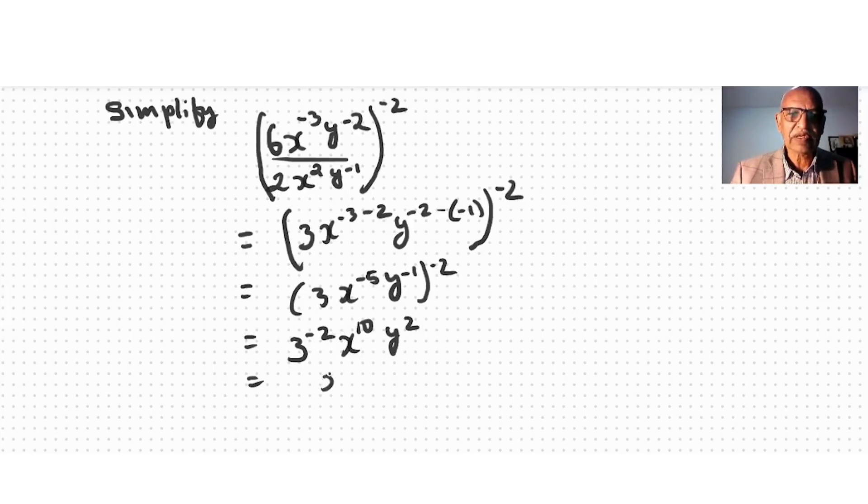x to the power of 10, y to the power of 2, over 3 to the power of 2, which is equal to x to the power of 10 y squared over 9, and this is the simplified form. That's it.